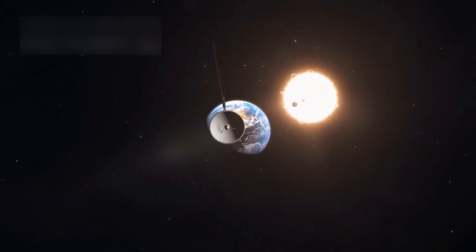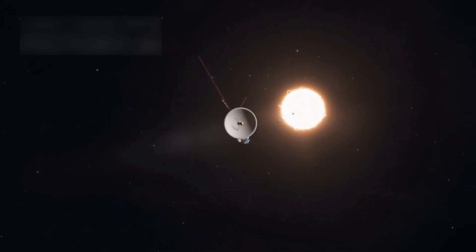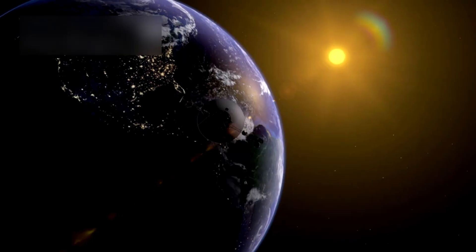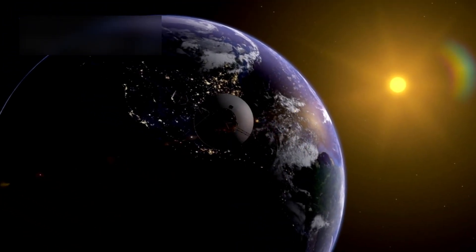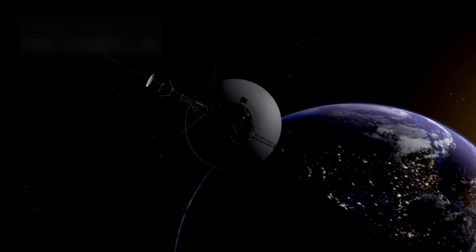In 2012, it crossed a major boundary called the heliopause, where the influence of our sun fades and interstellar space begins. This was a historic moment, making Voyager 1 the first human-made object to leave the solar system.